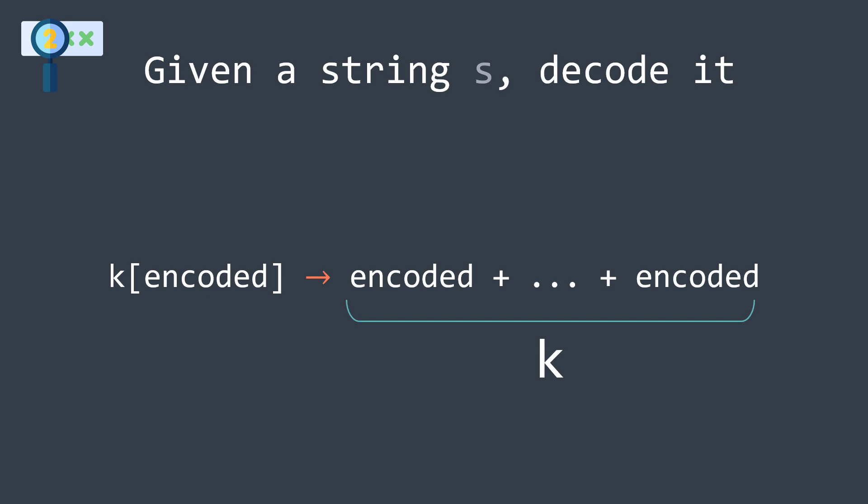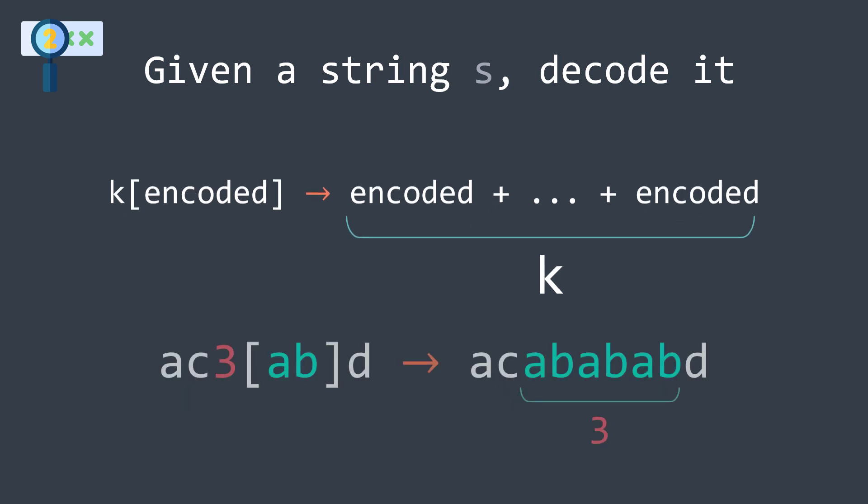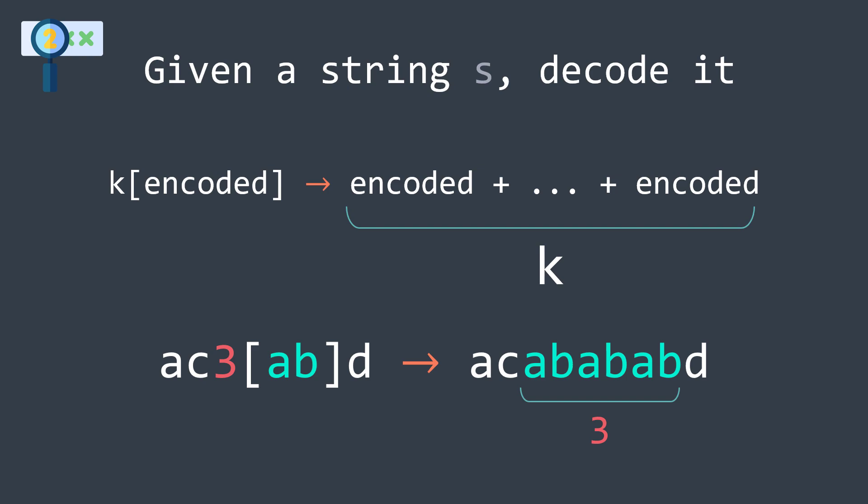For example, if we have ac3[ab]d, then ab has to be repeated three times in the decoded string, and we get ac ab ab ab d.